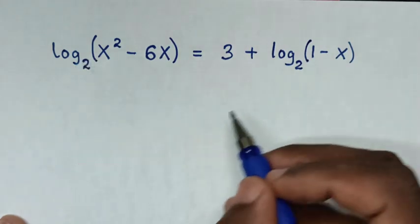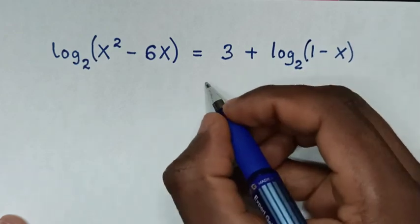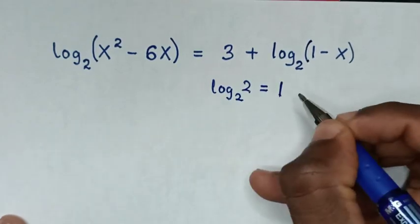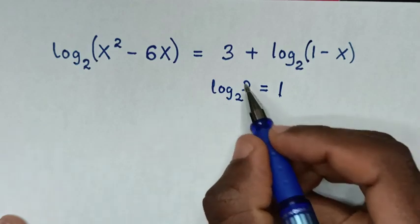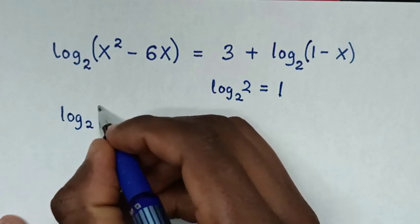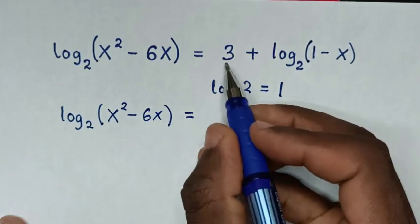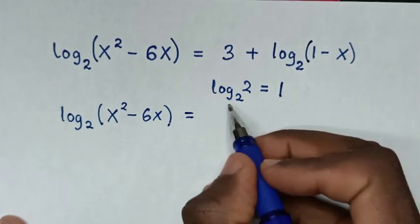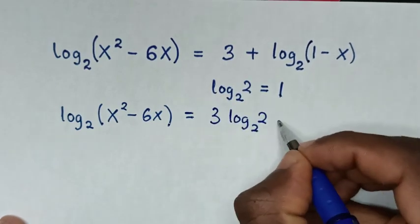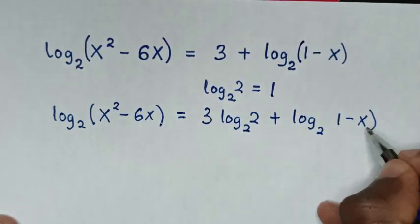So, as in here we have base 2 on both sides. In this step we will multiply by log of 2 to base 2, whereas log of 2 to base 2 is equal to 1. So we'll multiply 3 by log of 2 to base 2, giving us 3 times 1. It will be log base 2 of (x² - 6x) equals 3 times log of 2 to base 2, plus log base 2 of (1 - x).